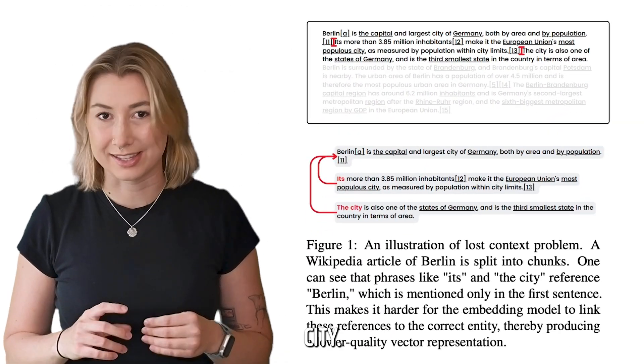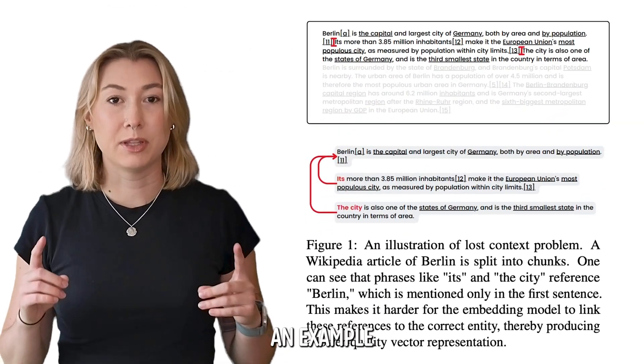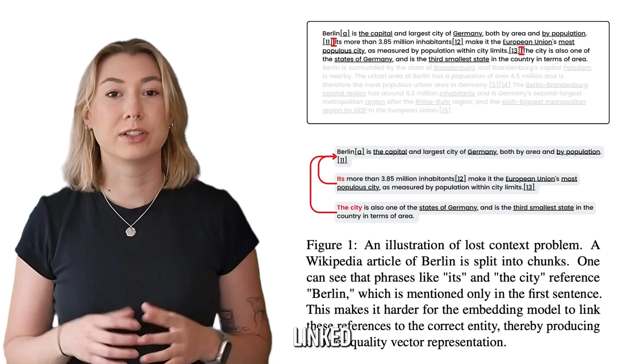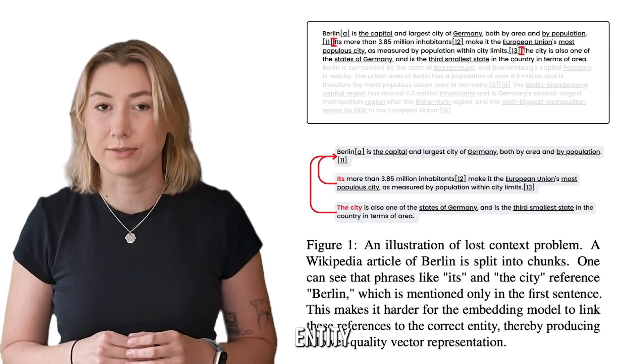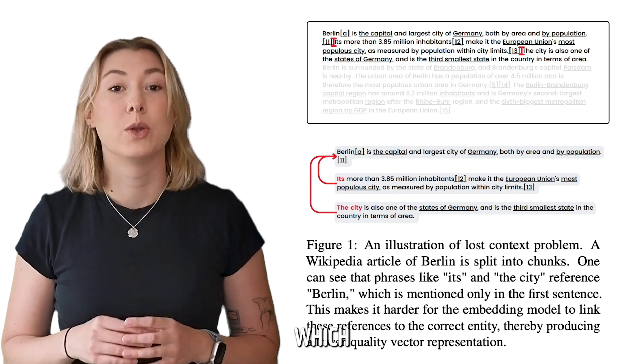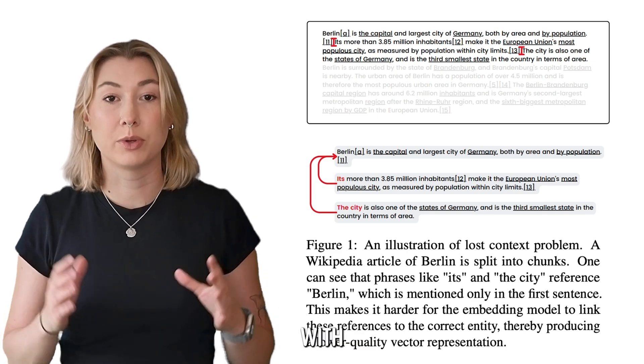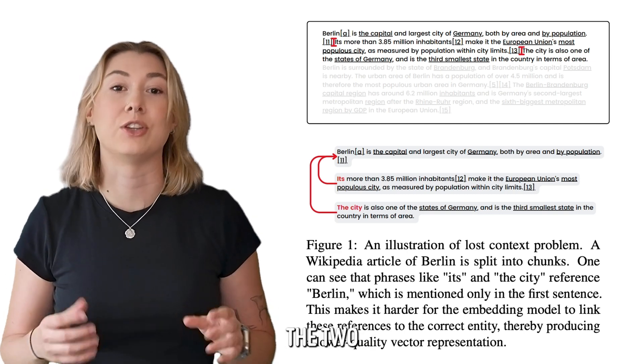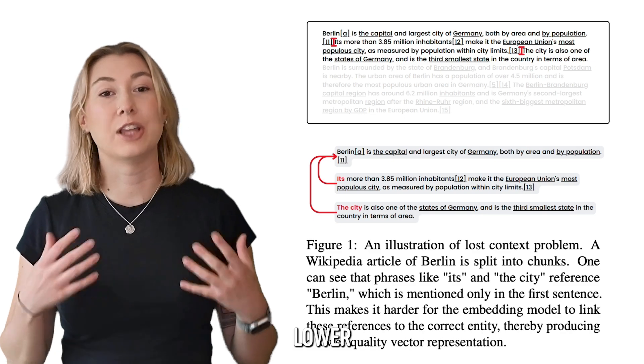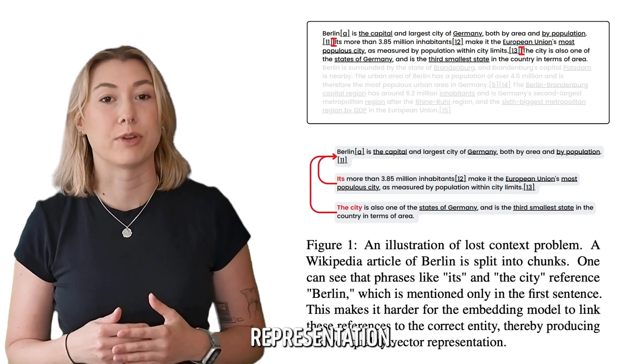Pronouns like 'its' and 'the city,' as shown in the example up here, are no longer linked to their relative entity, Berlin, which means the embedding model can struggle with relating the two, producing a lower-quality vector representation.